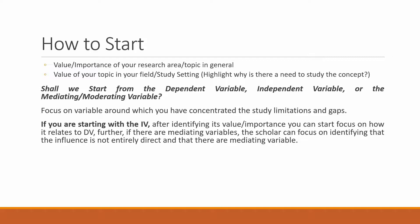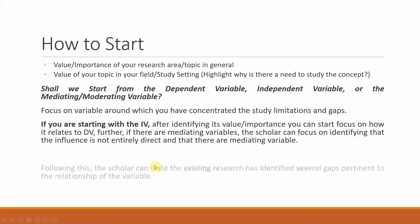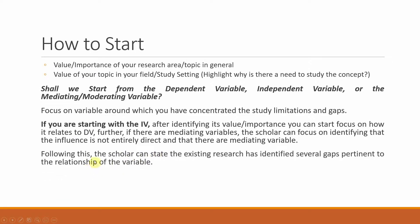So this is how you can start. Once you have mentioned that the influence is not direct, the scholar can state that existing research has identified several gaps pertinent to the relationship of the variables. So there are gaps in existing research pertinent to how these variables are interrelated with each other, and then you start writing about your gaps.